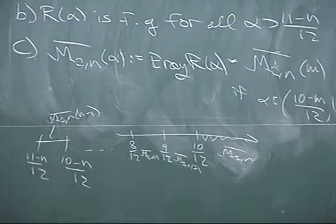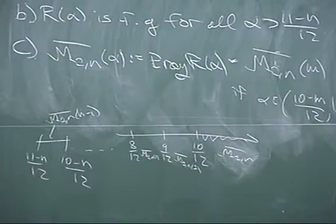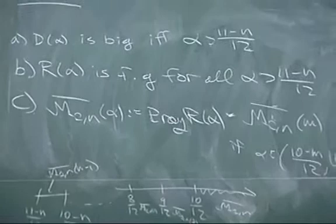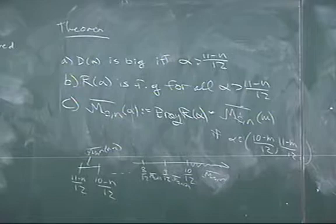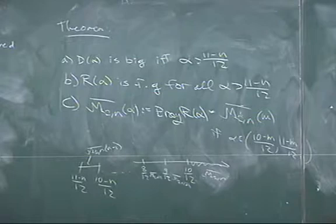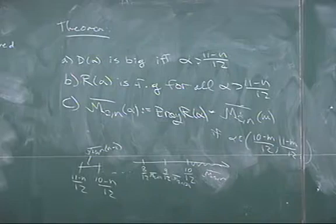This seems like evidence that M_{1,n} bar is a Mori dream space — here's at least a particular one-parameter slice. That's something to think about.